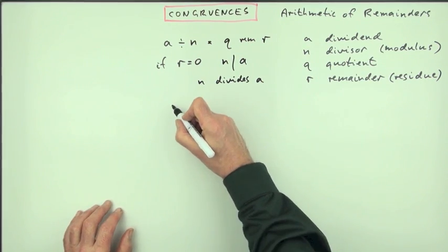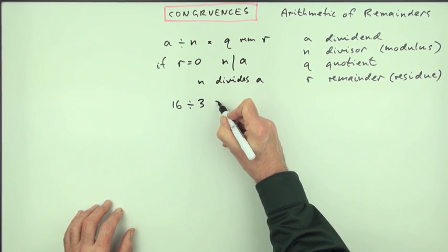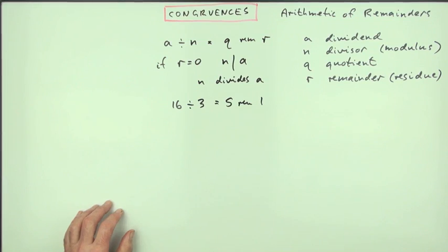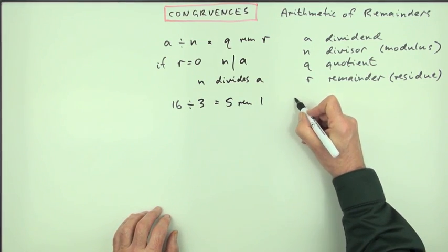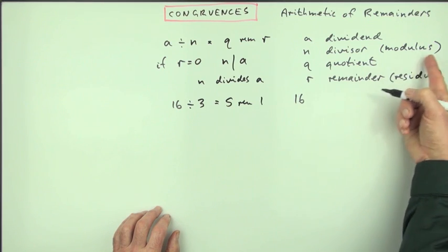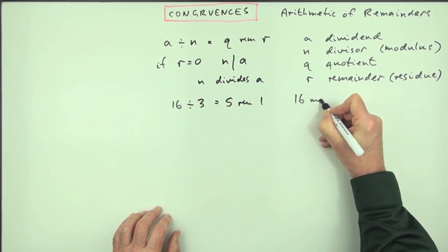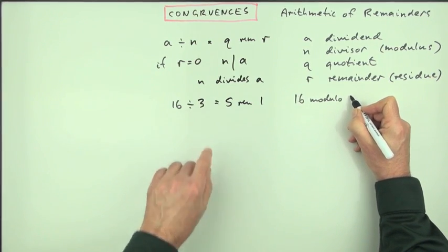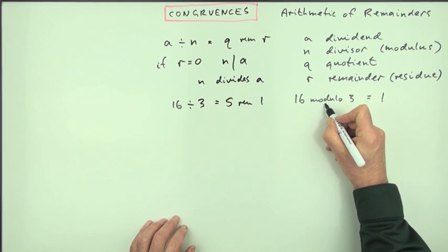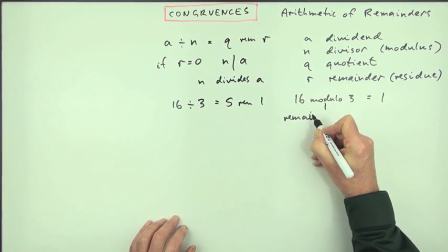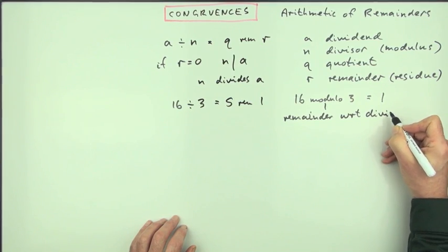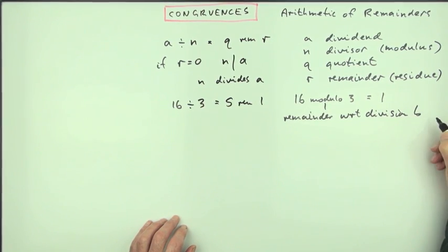As an example, dividing by 3. If I take 16 and divide it by 3, that'll go in 5 times and give me a remainder of 1. So you could say here, the number 16 with respect to division by N, and the word for that uses this: 16 modulo 3 is equal to 1, meaning the remainder with respect to division by 3.